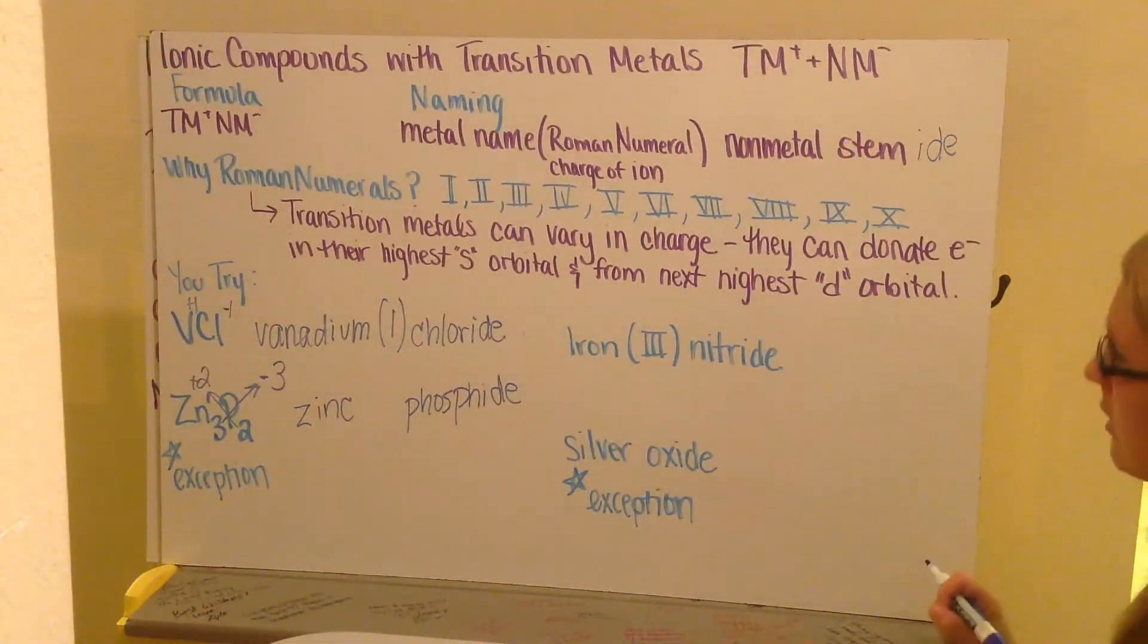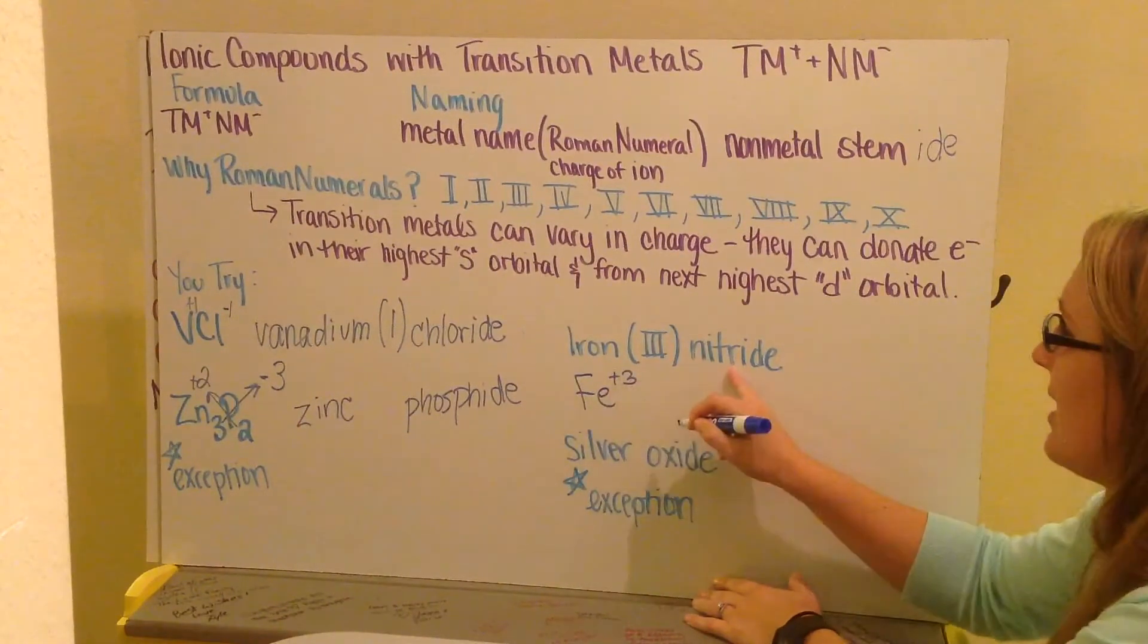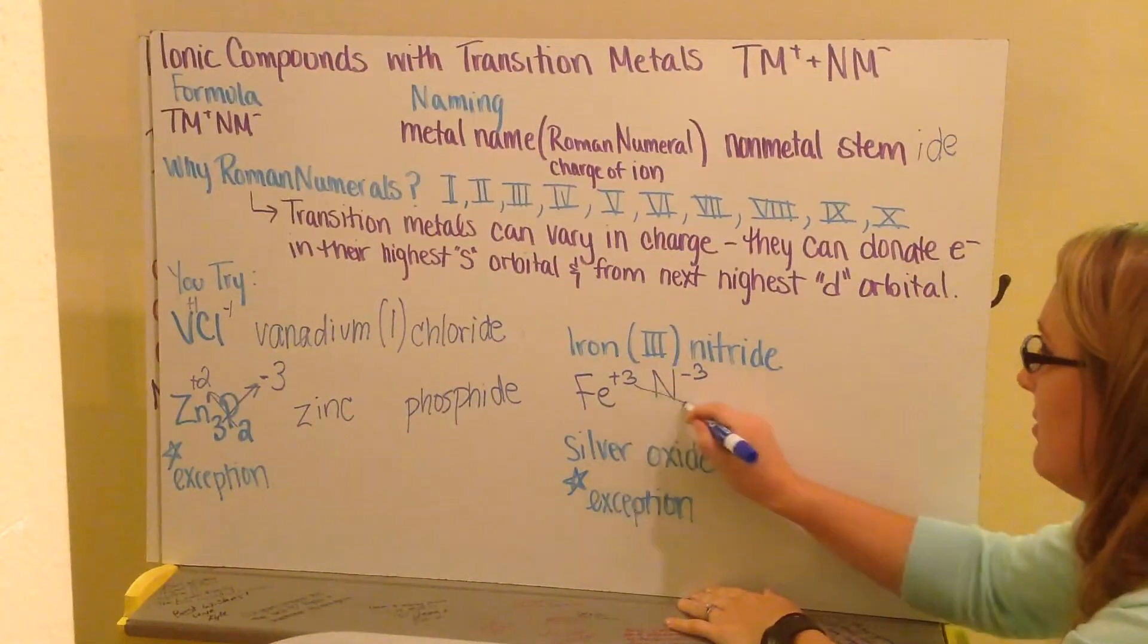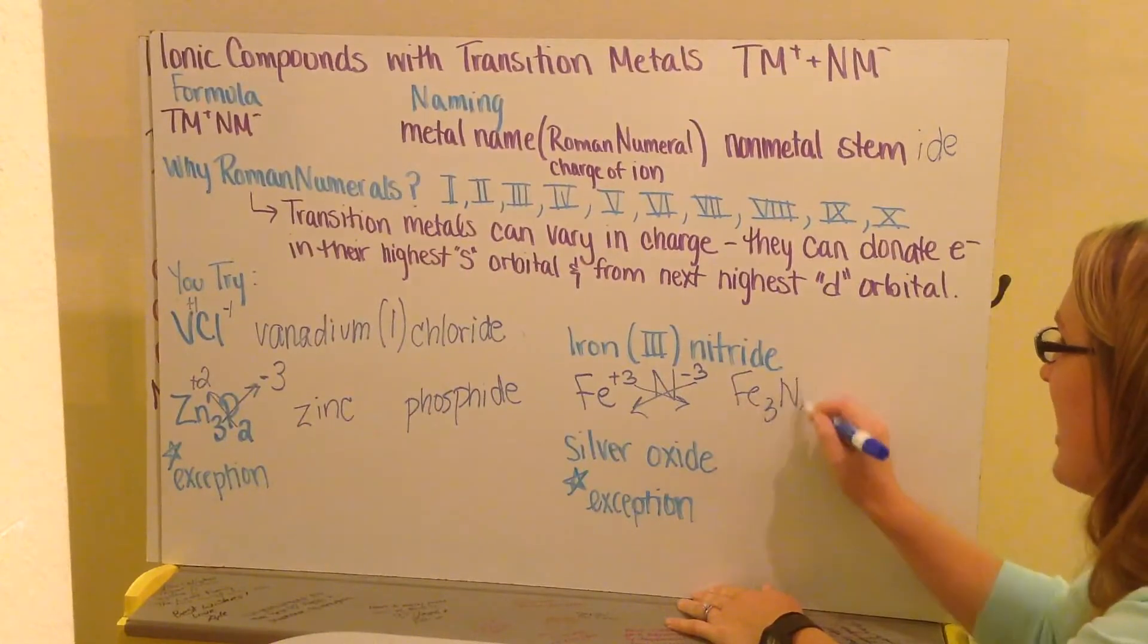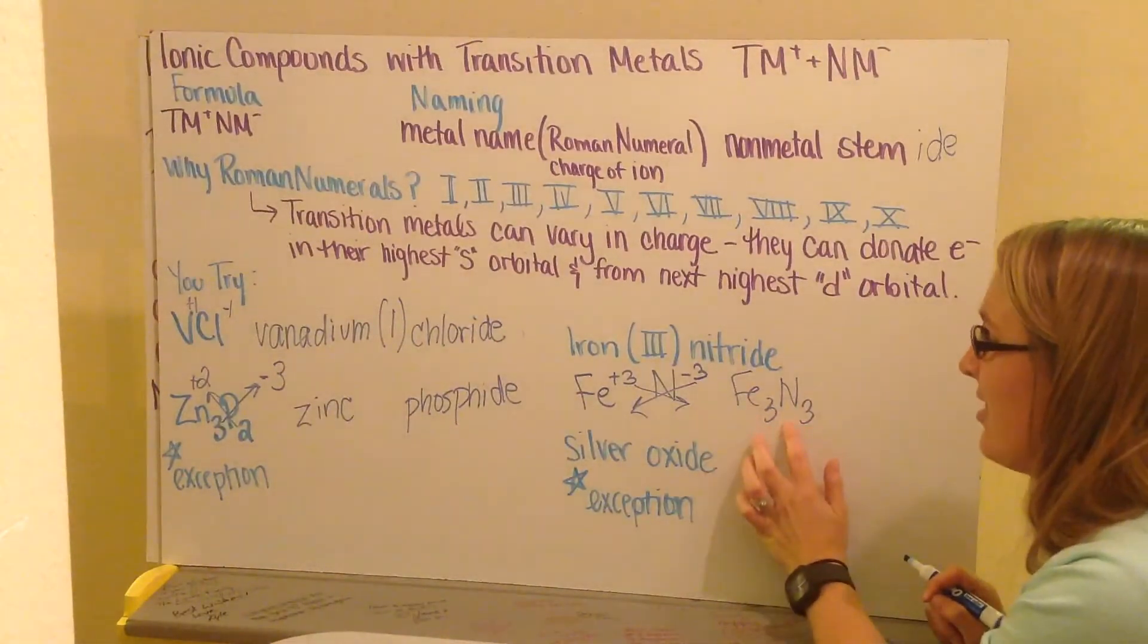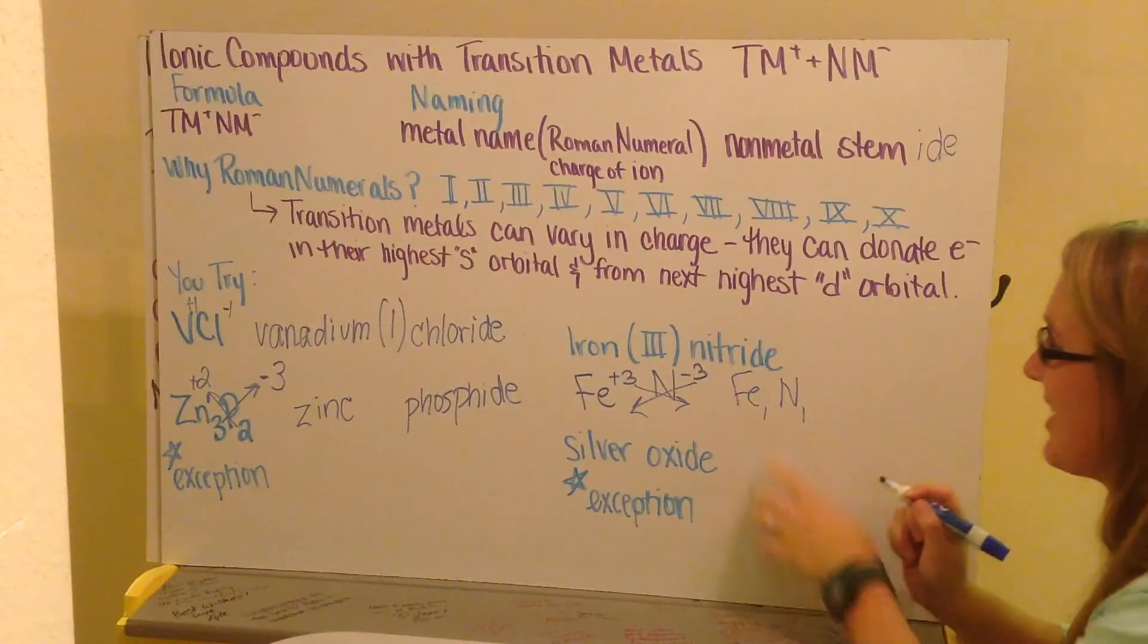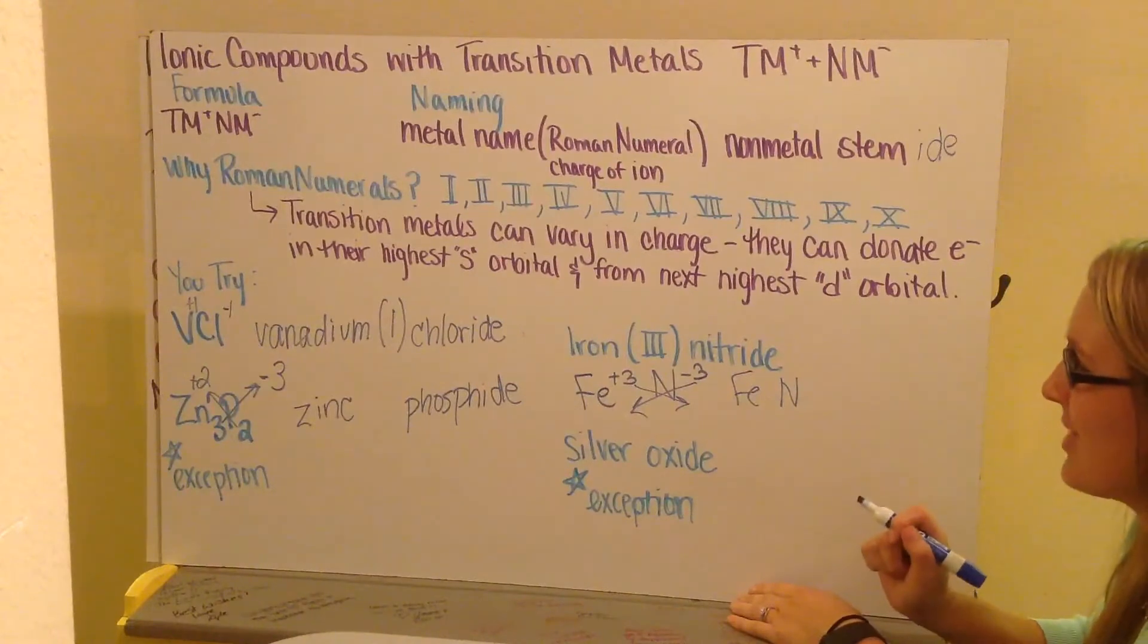Going the other direction, here I have iron 3 nitride. Iron, Fe plus 3, nitride, nitrogen, goes negative 3 because it's an anion. I go ahead and I criss-cross my charges down. And I see that I have Fe3N3. Now both of my subscripts are the same, which means my ratio from one to the other is equal, so I can reduce my subscripts and just make them one and one. Again, I don't write subscripts of one. So I just have FeN for iron 3 nitride.